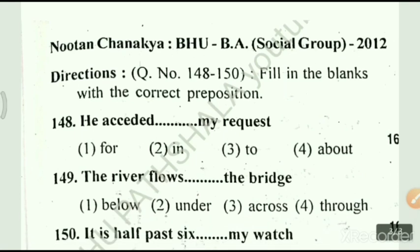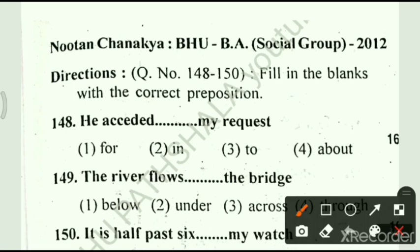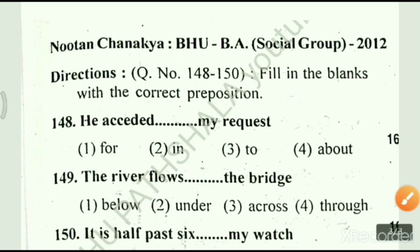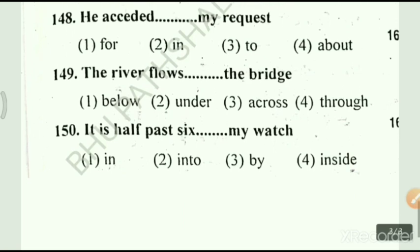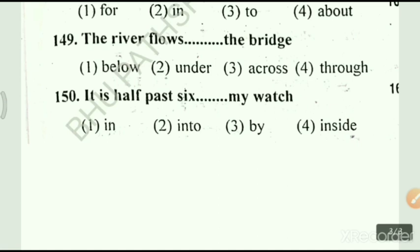We move to the last part of our video. From question number 148 to 150, we have to fill in the blanks with the correct preposition. Question number 148: he exceeded dash my request. Options: option 1, for; option 2, in; option 3, to; option 4, about. Our answer is option number 3, to. Question number 149: the river flows dash the bridge. Options: option 1, below; option 2, under; option 3, across; option 4, through. Answer is option number 2, under.